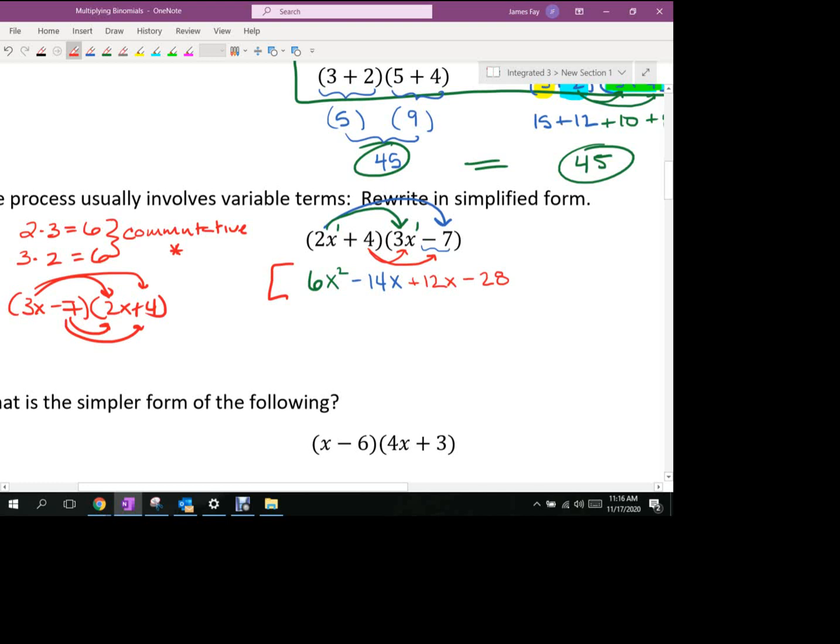Now, when we do this, we're going to generate, usually, two things like that. Those are like terms, correct? Because they both have the same variable with the same exponent. So we're going to add those together. So we get 6x squared. Negative 14x plus 12x is negative 2x. And then minus 28. And that would be the product of 2x plus 4 and 3x minus 7.